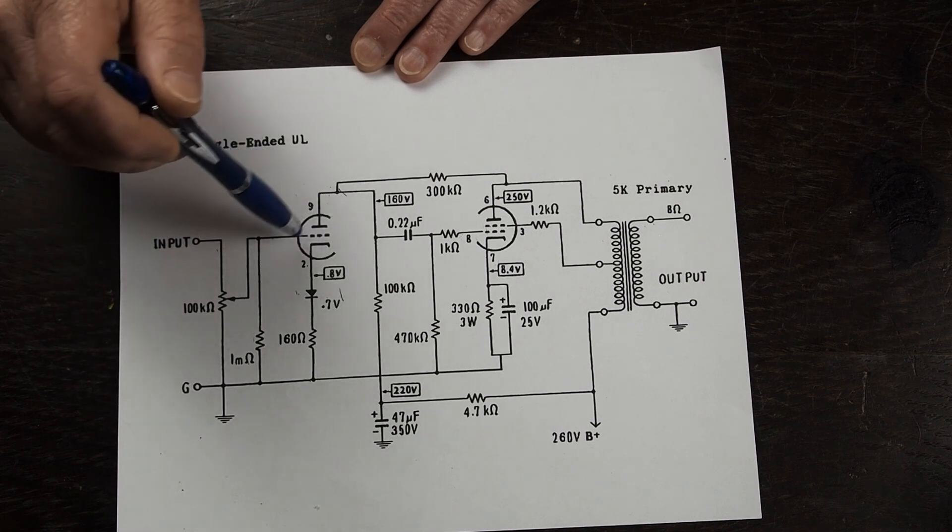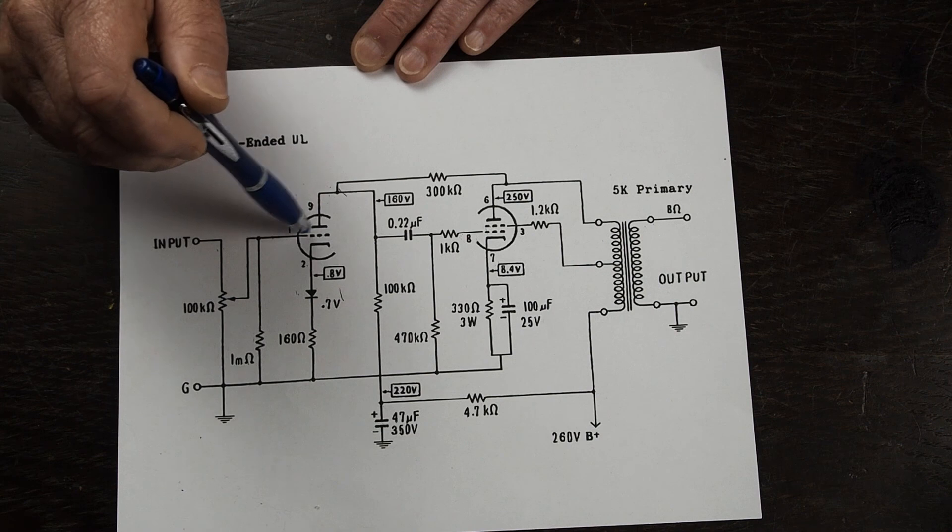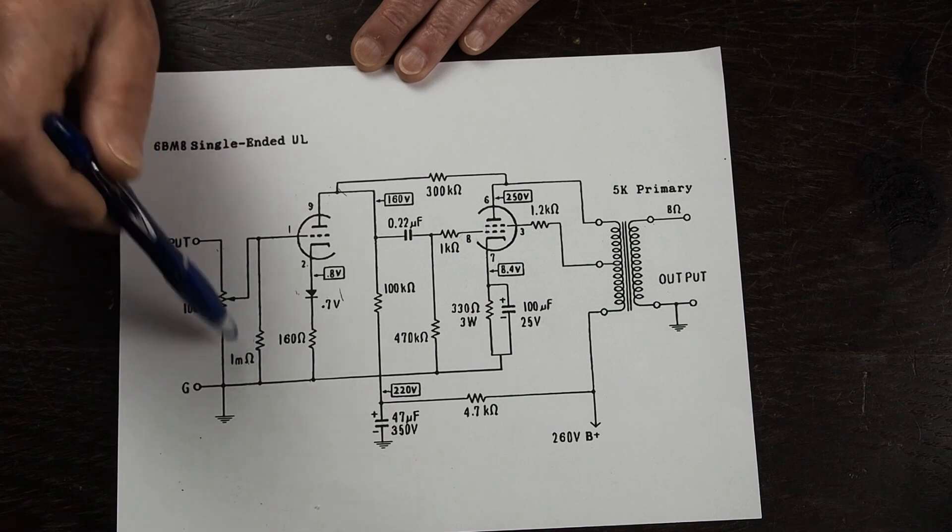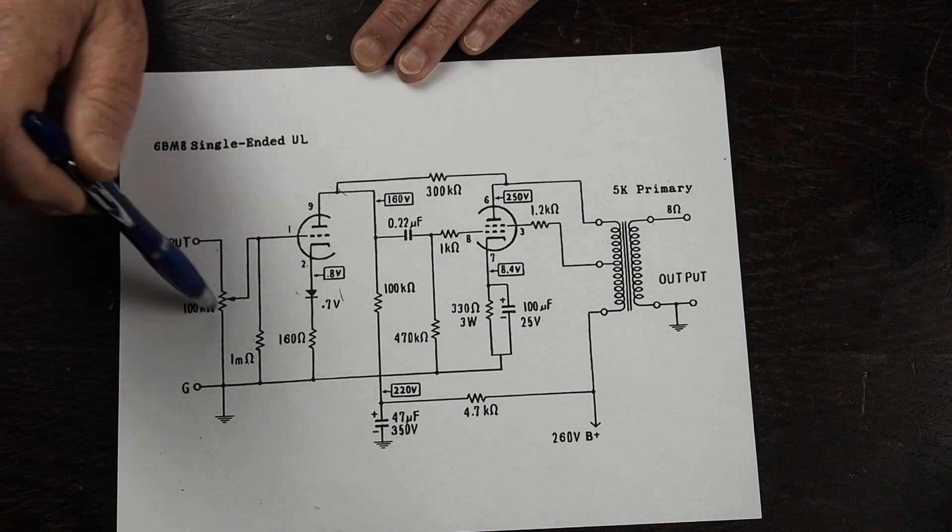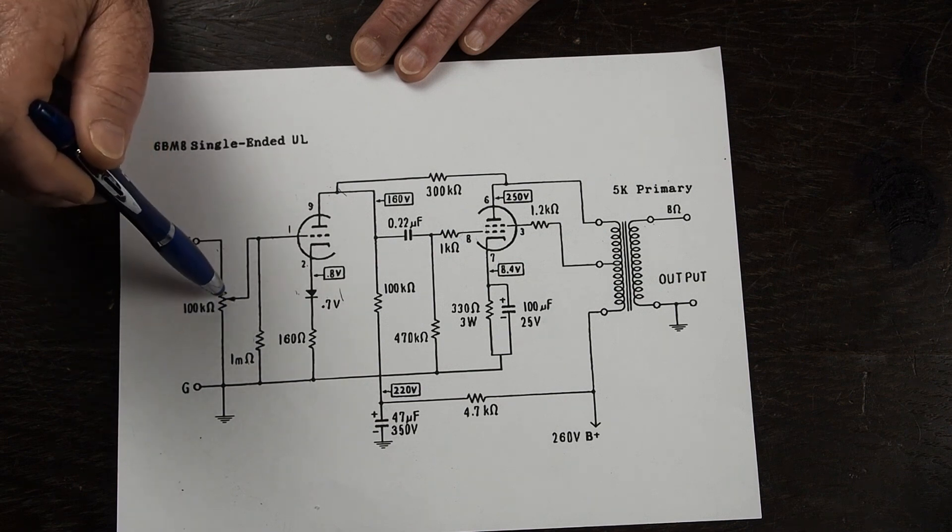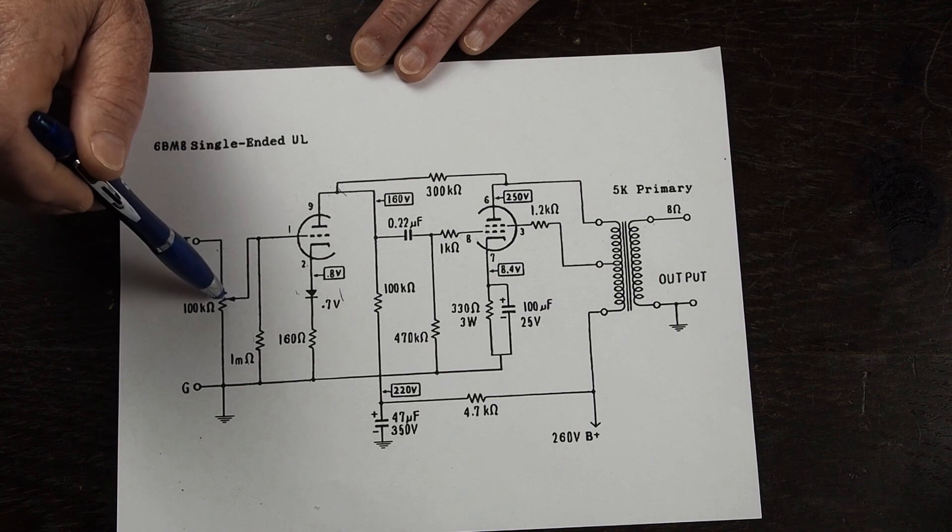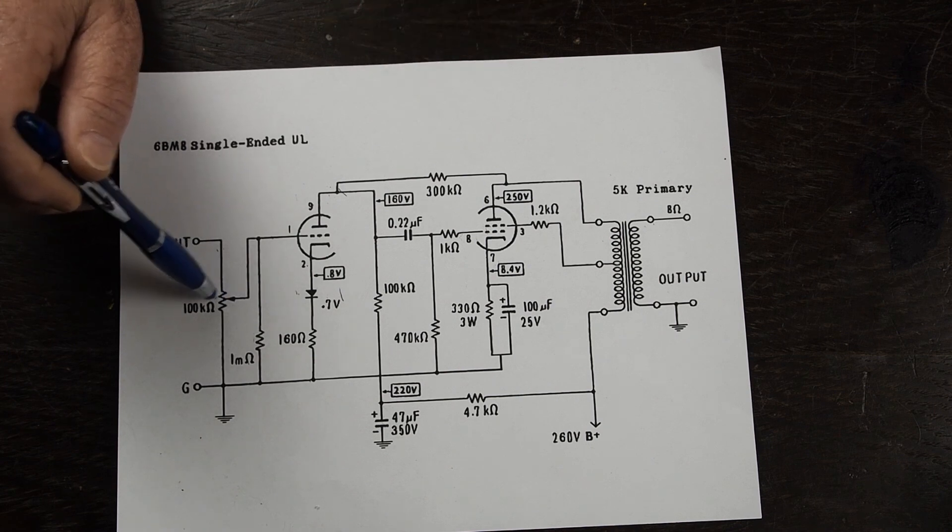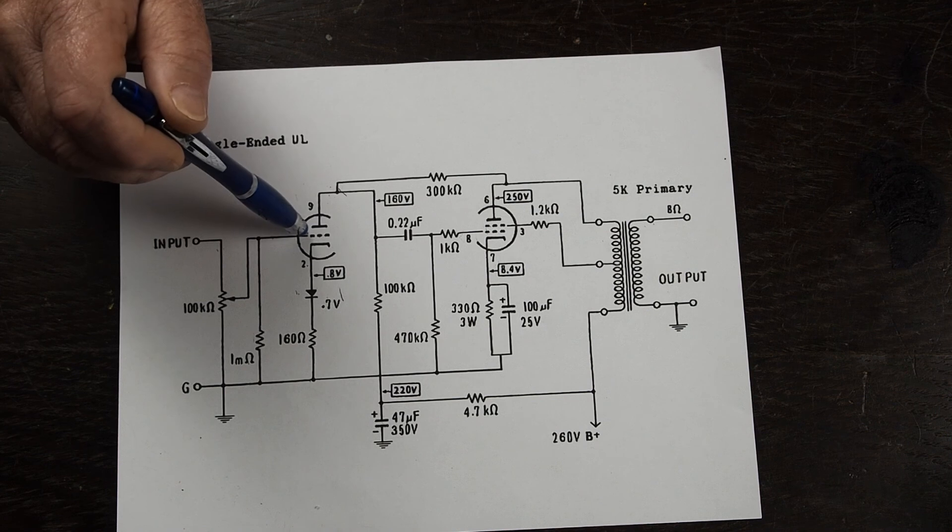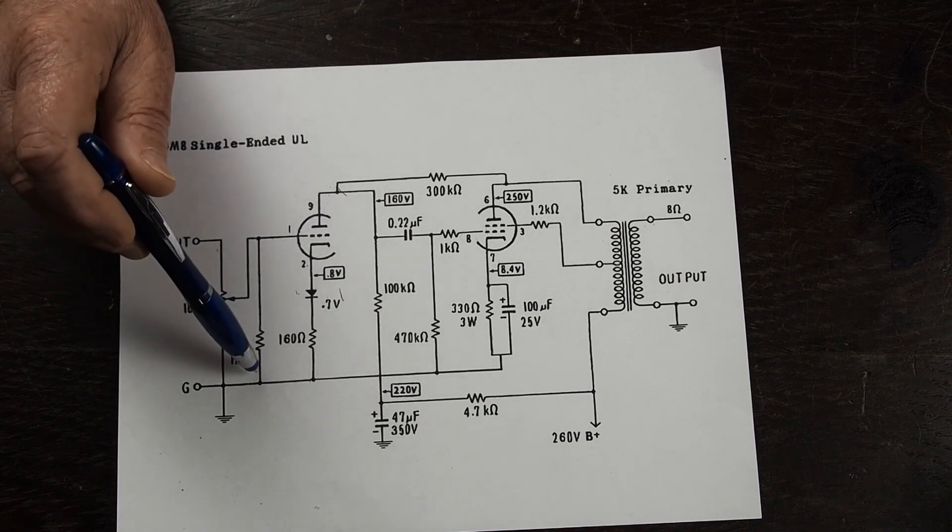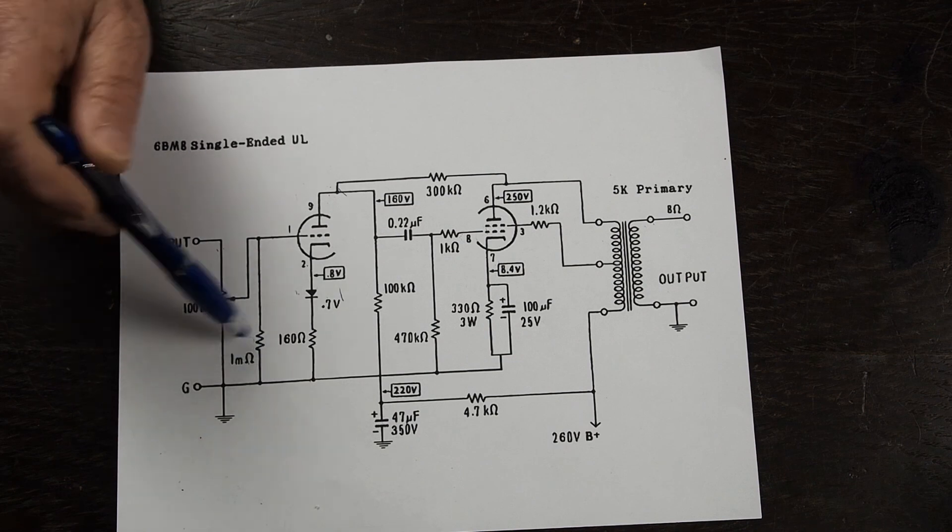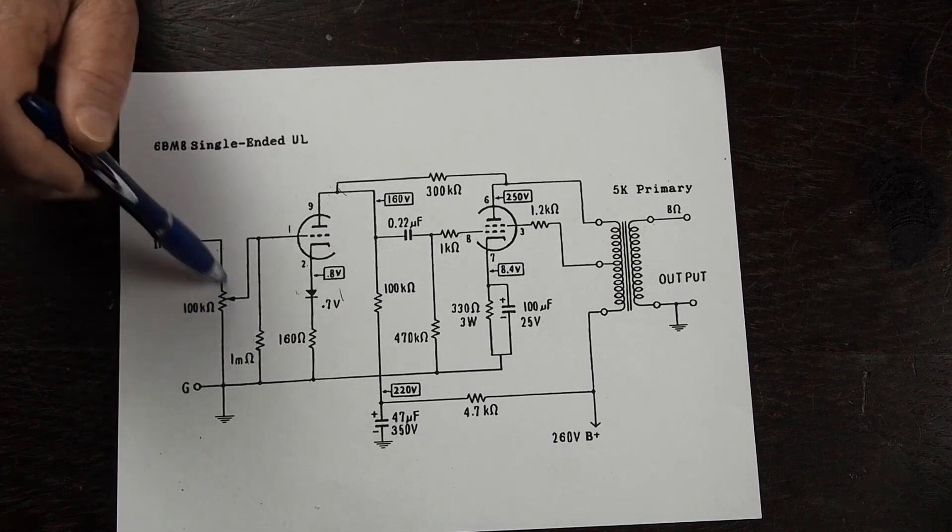The tubes need a reference to ground on the grid. You actually could leave out this 1 megaohm resistor because this potentiometer would provide the connection to the ground, but this is here as a safety in case something happens and the wiper on this potentiometer loses connection to the inside itself so that we don't have a grid that doesn't have a connection to ground which would make the tube run away and red plate and cause all kinds of bad problems. So this 1 megaohm resistor is here more of a safety thing in case this potentiometer fails.